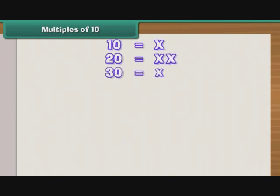Multiples of 10. We have seen that 10 is written as X and 20 as XX. By the same logic, 30 is XXX, that is 3 tens.